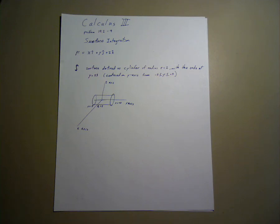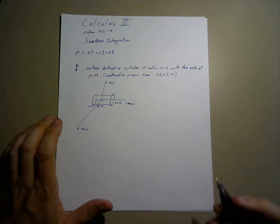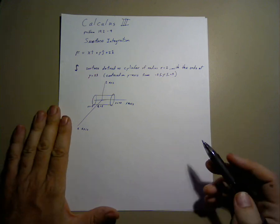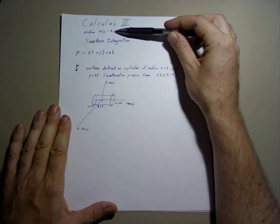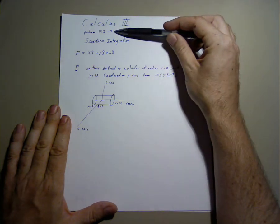Surface integration involves finding the flux over a surface. In this case, we'll be using an example from section 19.2, problem 9.